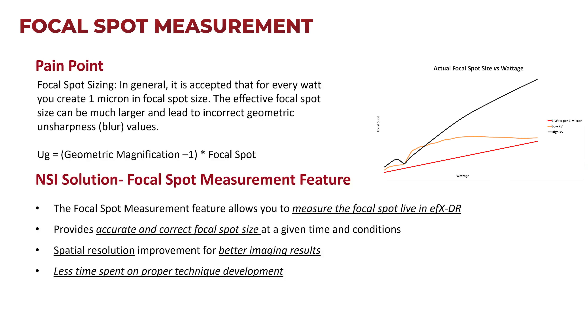When we measure our focal spot and want to understand the sharpness in our image, we can apply that focal spot measurement to the geometric unsharpness calculation. Without that number, we're more or less guessing at the focal spot size, which gives us an incorrect unsharpness measurement. With this feature, you can measure it live in EFXDR, giving you the accurate, correct focal spot size for your specific setup.